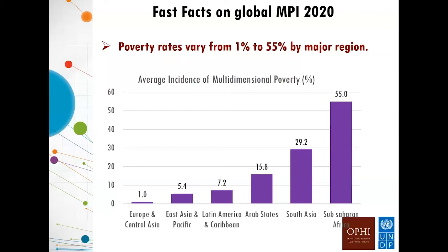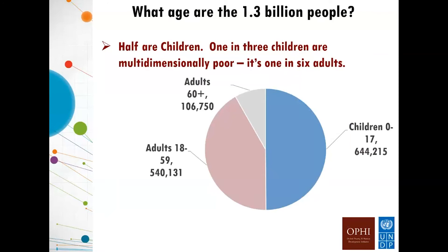In terms of age, half of the MPI poor people are children under the age of 18, and 106–107 million are adults who are 60 years and above — an important population to track in this time of COVID. The sadness is that among children, one in three are multidimensionally poor, whereas among adults it's one in six.